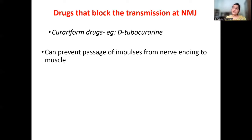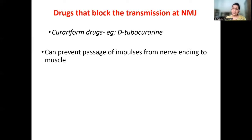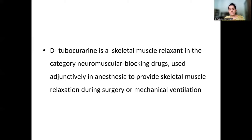The third group — curare-form drugs — block transmission at the neuromuscular junction. You may have heard of arrow poison; curare was the one used in olden days as arrow poison. Based on that phenomenon, nowadays we have different anesthetic drugs like tubocurarine and di-tubocurarine. They prevent passage of impulses from nerve endings to muscle. Di-tubocurarine is used adjunctively in anesthesia as a muscle relaxant to provide skeletal muscle relaxation.